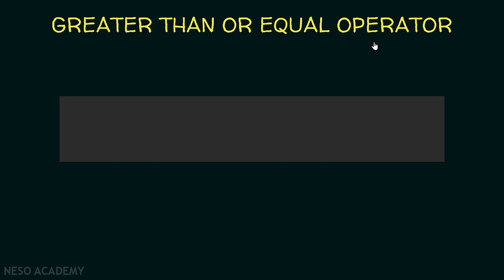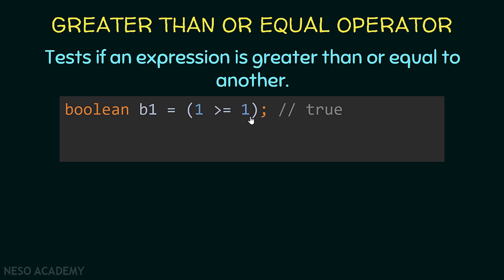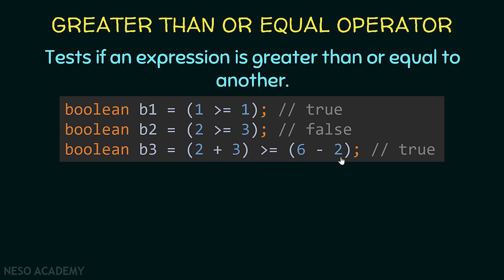Now let's see the greater than or equal operator. It is used to test if an expression is greater than or equal to another expression. Testing if one is greater than or equal to one is true because one is equal to one. The operator evaluates to true if the left value is greater than the right one, or if they are equal — this is why we say greater than or equal. Testing if two is greater than or equal to three is false because two is neither greater than nor equal to three. Finally, testing if (2 + 3) is greater than or equal to (6 - 2): five is greater than four, so this is immediately true.